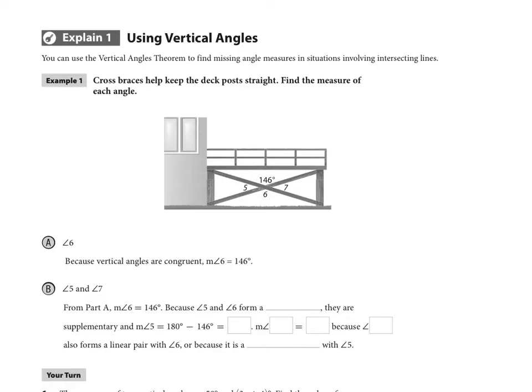In example one here we have two cross braces that are helping to support this deck and the posts and keep them upright. We want to find the measure of the angles we're being asked for. The first one is angle 6. Because we just proved in the last video that vertical angles are congruent, if the one above it is 146 degrees then so is angle 6. So that's pretty simple.